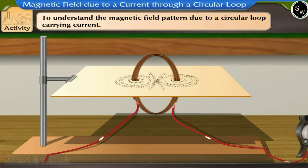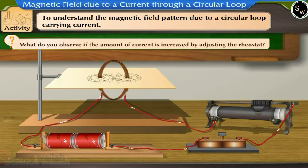The filings get arranged in a circular pattern with the wire of the coil as the axis. What do you observe if the amount of current is increased by adjusting the rheostat? You will notice that the filings get arranged